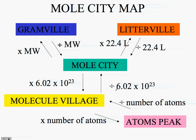Wherever you are on the map, wherever you want to go, you need to know where you're starting and where you want to finish. So if I start at atoms and I want to go to grams, I would divide by the number of atoms, divide by Avogadro's number, and multiply by the molecular weight, and my answer would be in grams. Having said that, let's look at the problem.